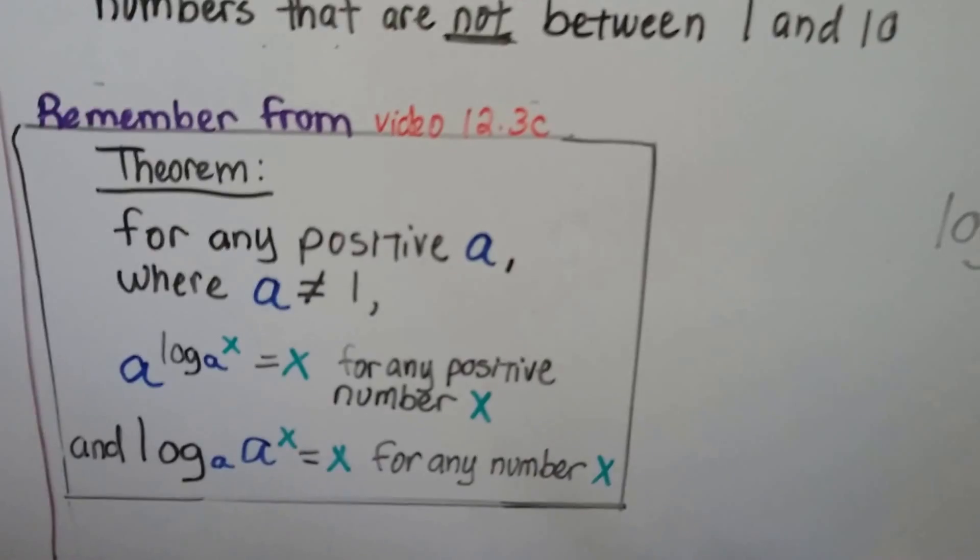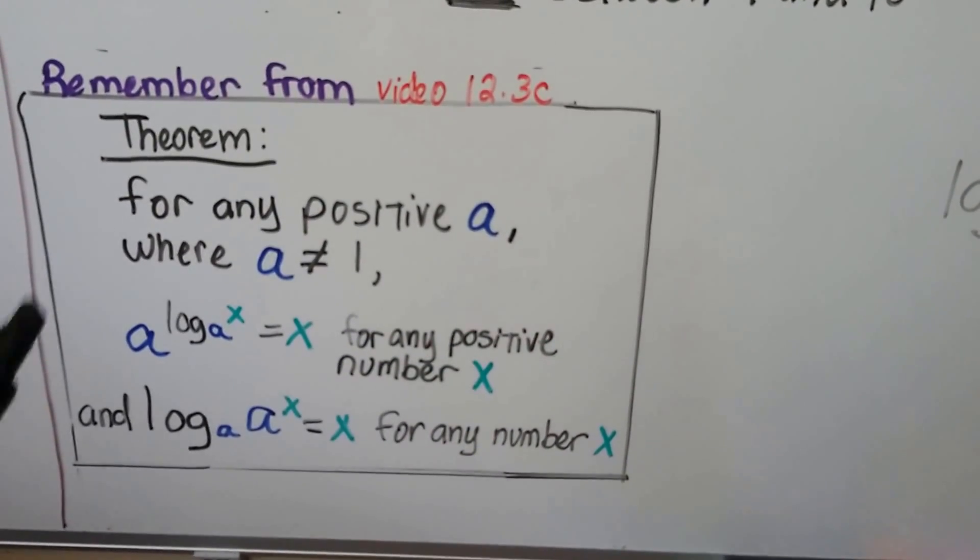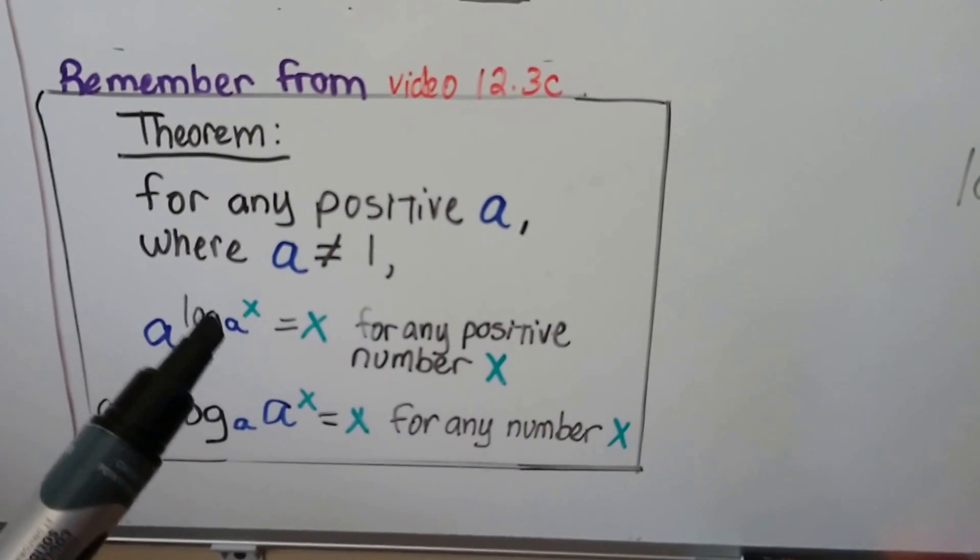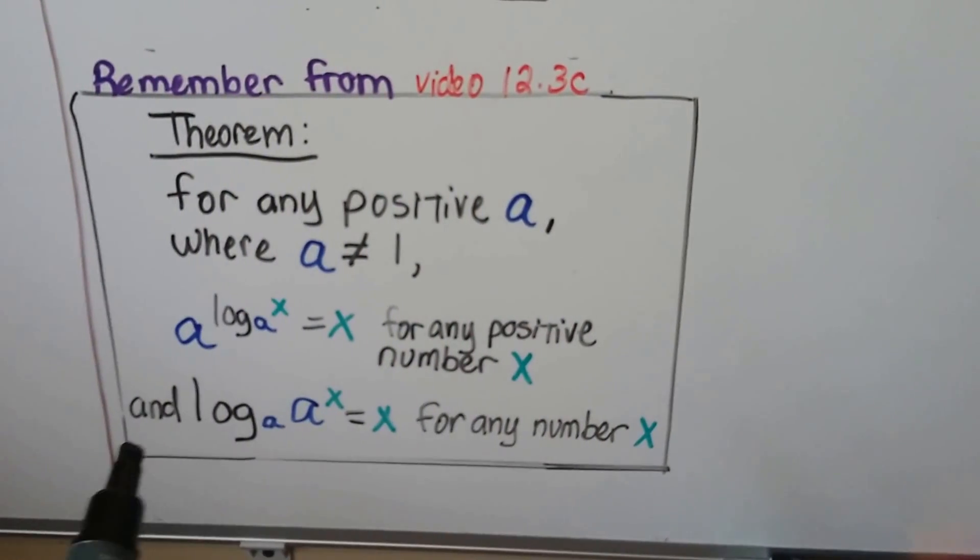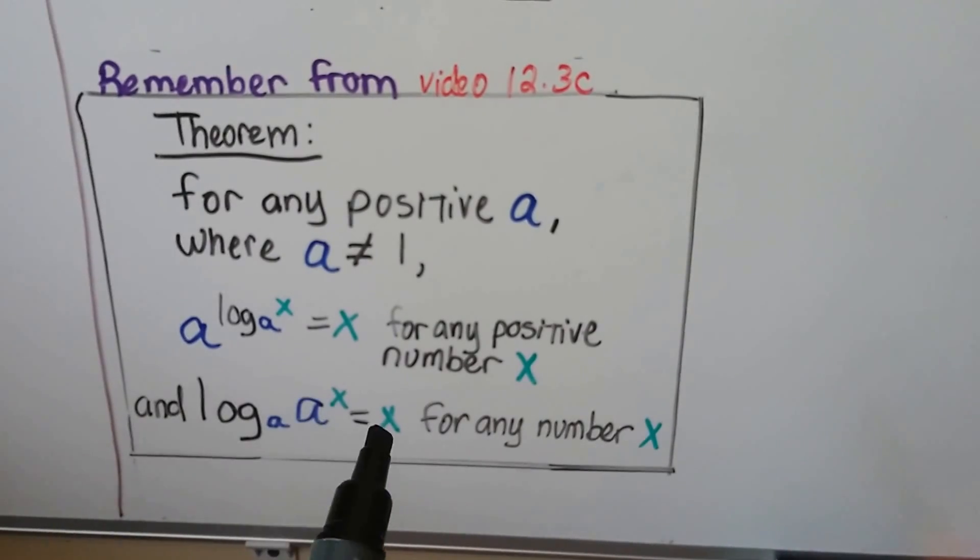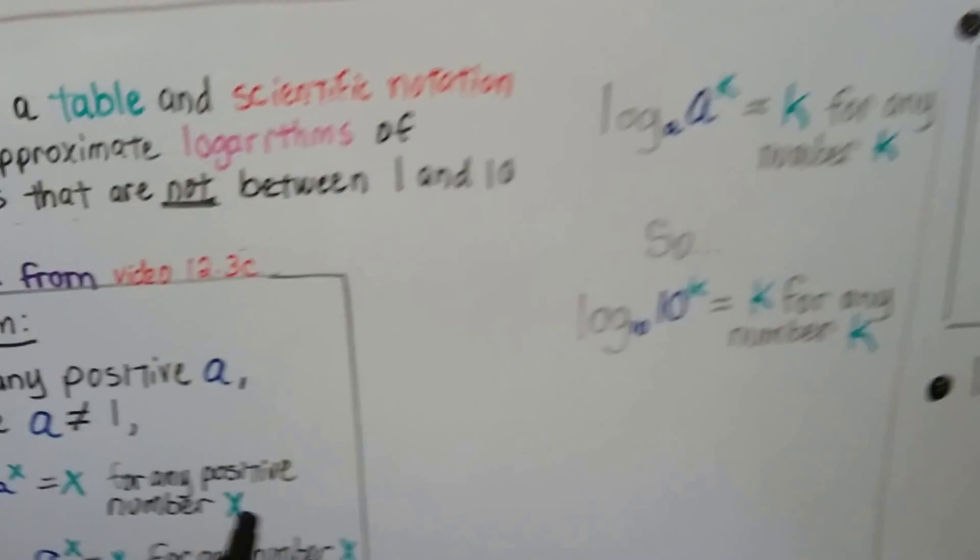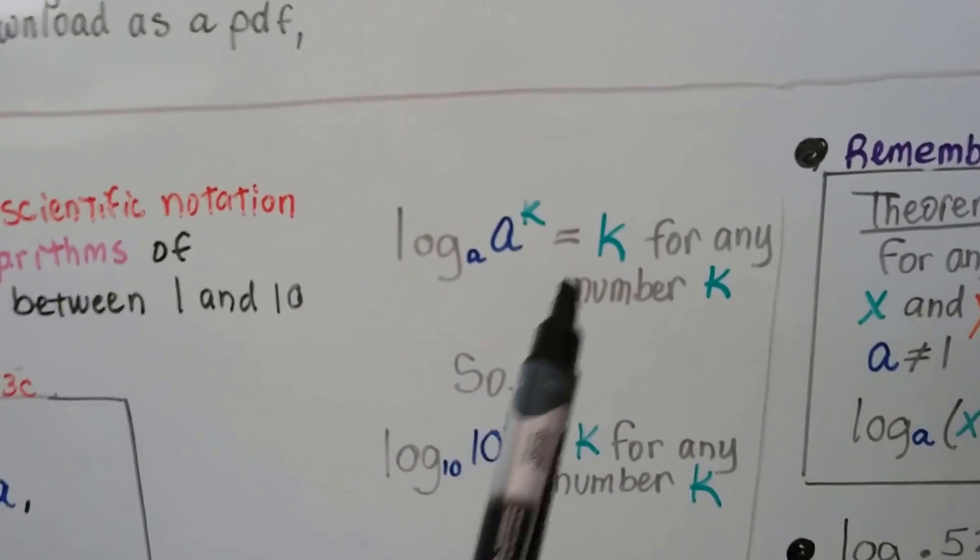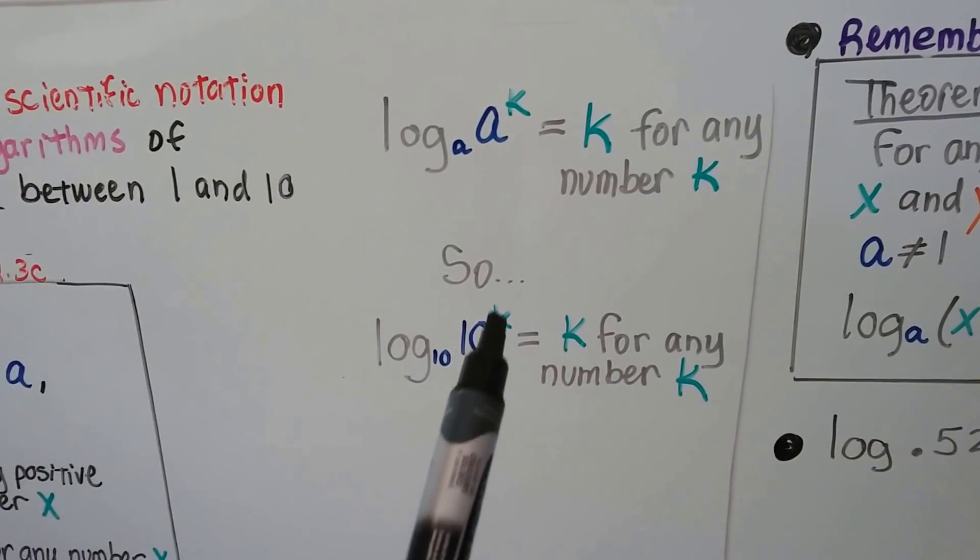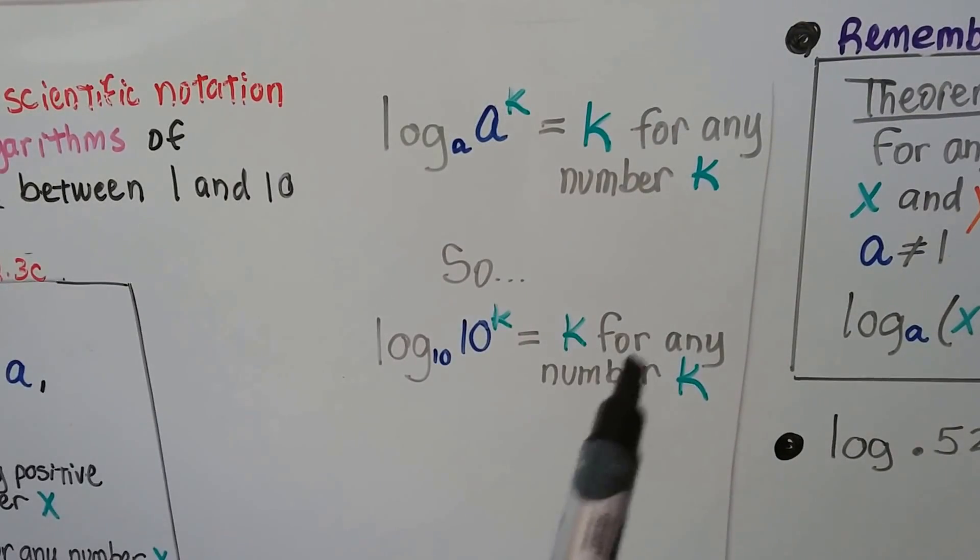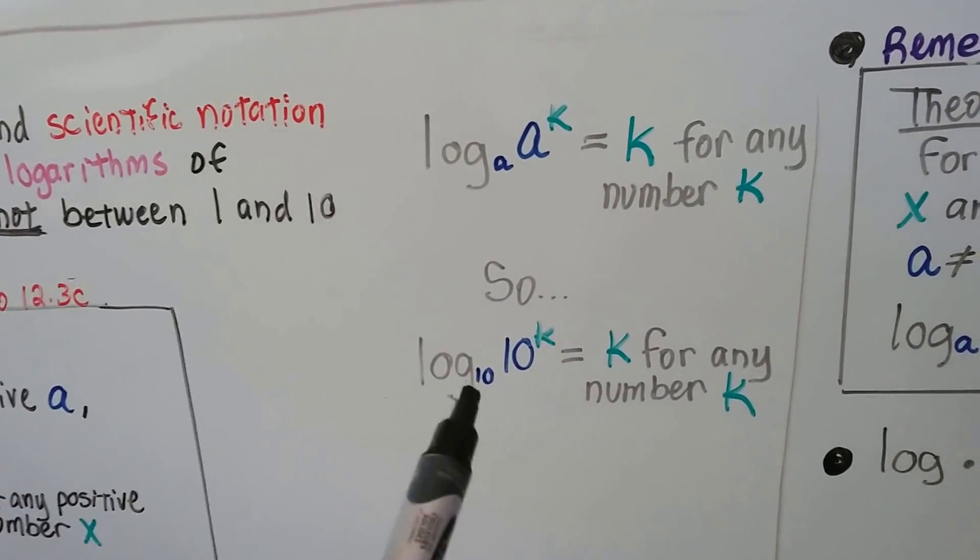Remember from video 12.3c we talked about this theorem that for any positive a where a is not equal to 1, that a to the log base a of x is going to equal x for any positive number x. And it said log base a of a to the x is x for any number x. That means if we have a log base 10 of 10 to the k power, that means it's k for any number k. So that's where scientific notation is going to come in.